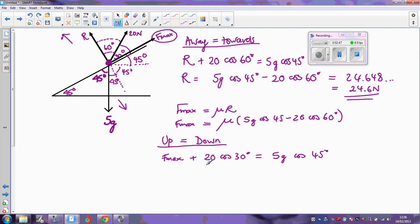So if I just make f max the subject of that, f max, the maximum frictional force, is just going to be 5g cos 45 minus 20 cos 30. And I'm going to go back now to here, because I've got another expression there for f max.